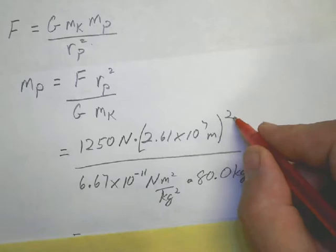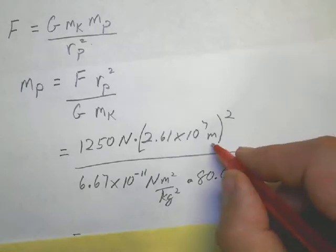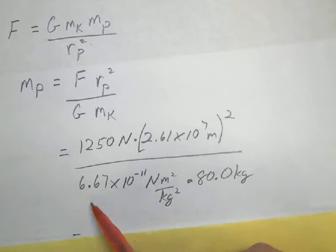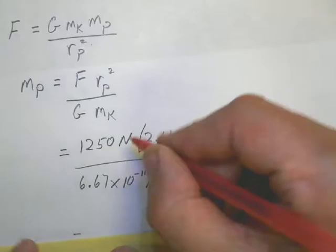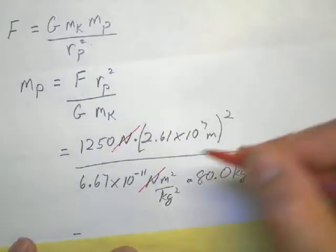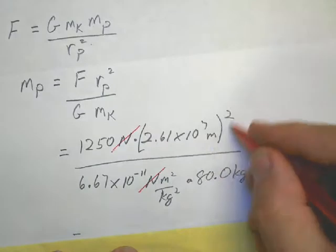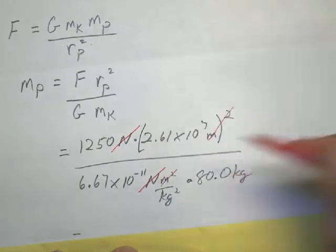So we look at our units here, the newton up in the numerator divides, cancels that one out. We'll have meters squared here, cancels out this meter squared. And one kilogram here cancels out the squared kilograms, so your answer is left in kilograms.